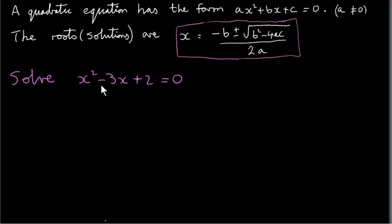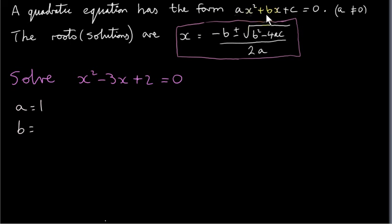Suppose we want to solve this quadratic equation: x squared minus 3x plus 2 equals 0. We write down what a, b and c are. a is the coefficient of x squared — a in this case is 1. b is the coefficient of x — b is minus 3. c is the constant term — c in this case is plus 2.